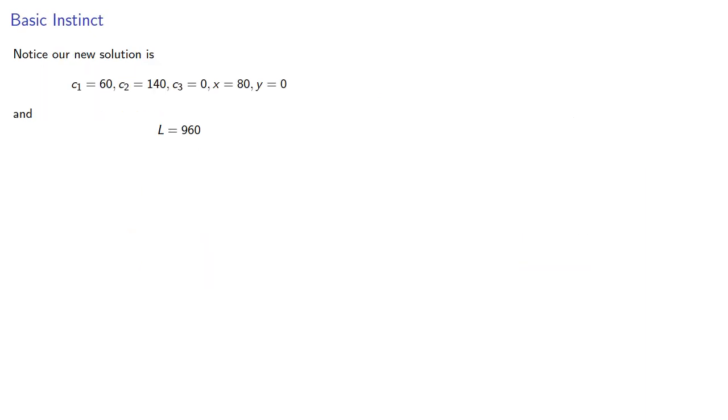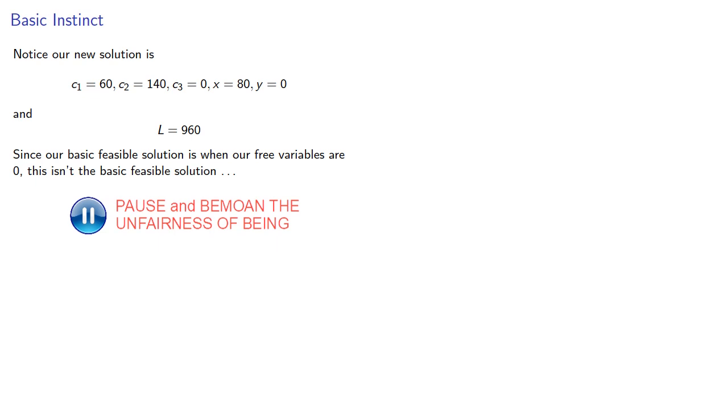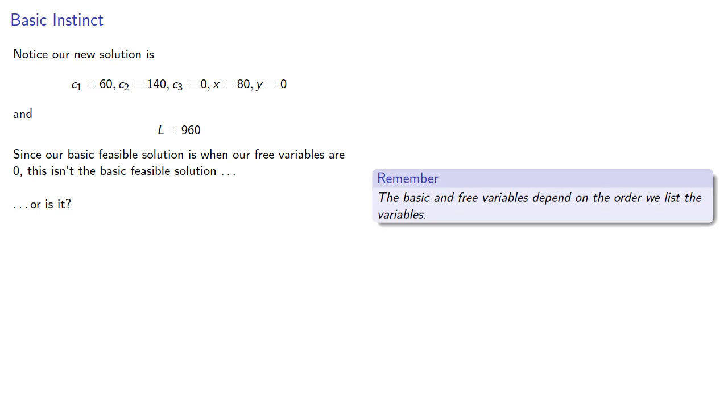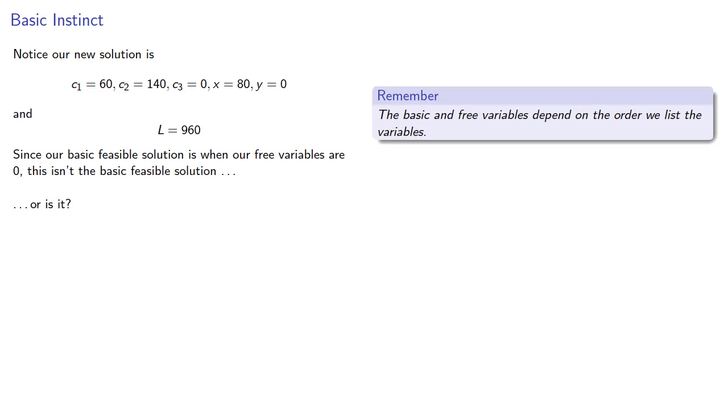Notice our new solution is. Since our basic feasible solution is when our free variables are zero, zero, this isn't the basic feasible solution. Or is it? Remember, the basic and free variables depend on the order we list the variables. This would be the basic feasible solution if our free variables were c3 and y.